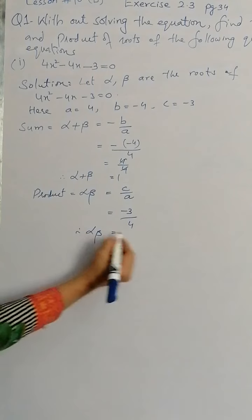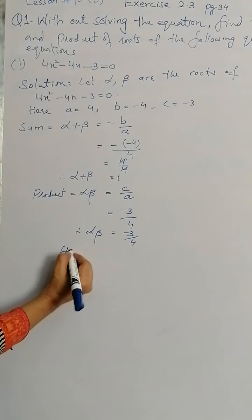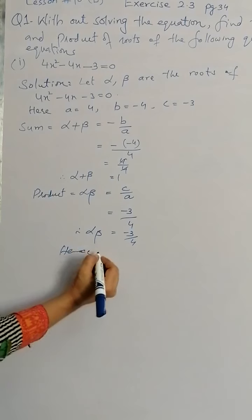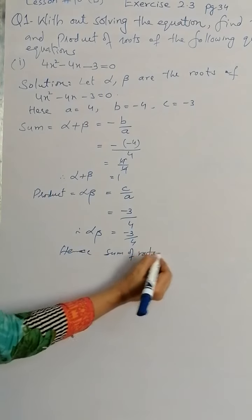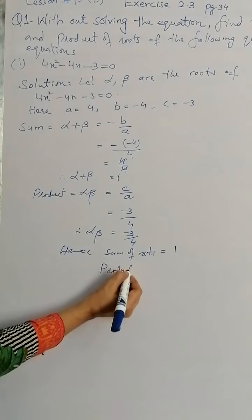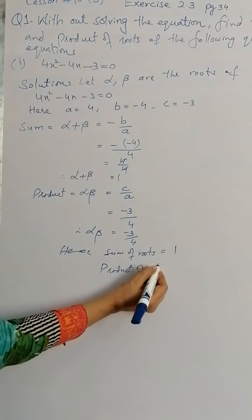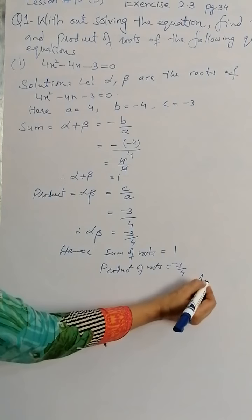So product of root becomes minus 3 by 4. Hence, sum of roots is 1, while product of roots is minus 3 by 4, and this is the answer.